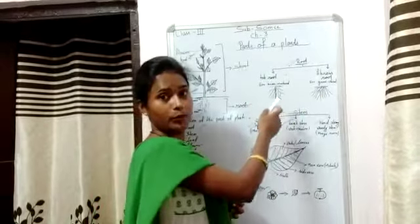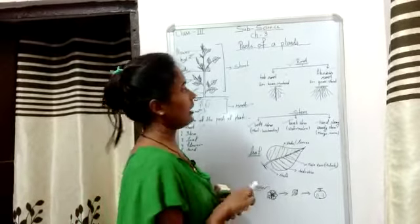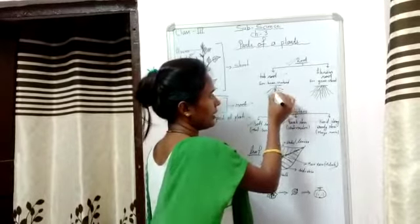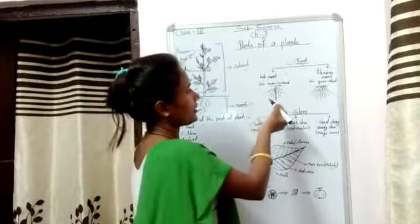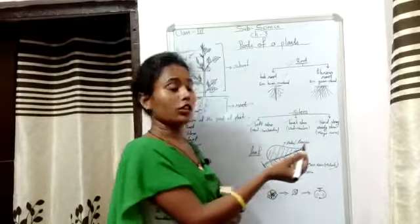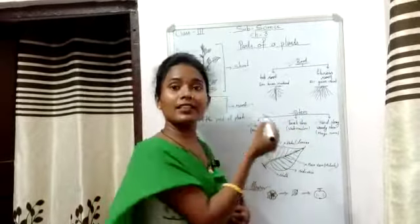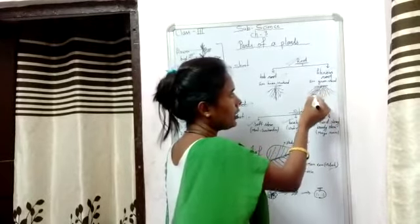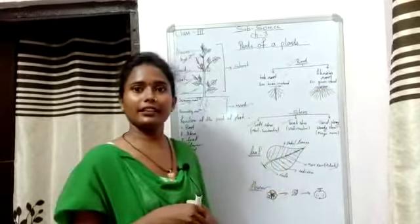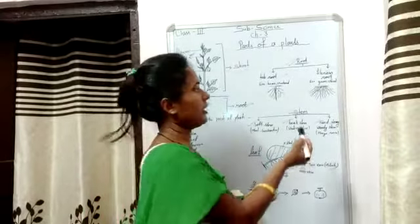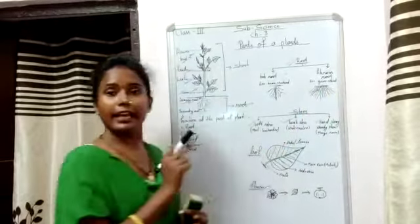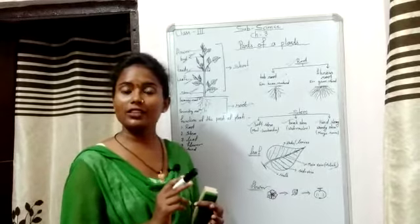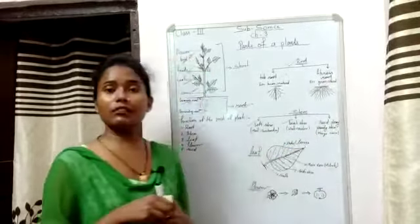What is a tap root? A tap root is one where the main branch has other branches growing from it. Such roots are called tap roots. And roots where instead of one main branch, separate individual branches grow out — those are called fibrous roots. For example, grass and weeds have roots that are separate and not attached to each other. These are called fibrous roots.